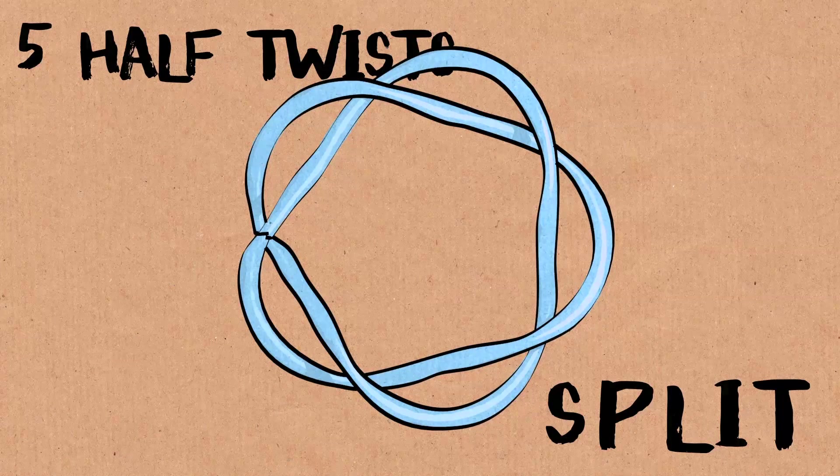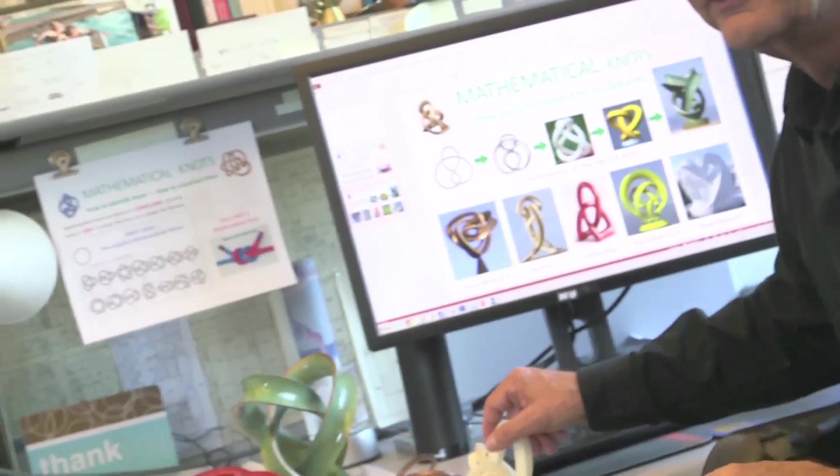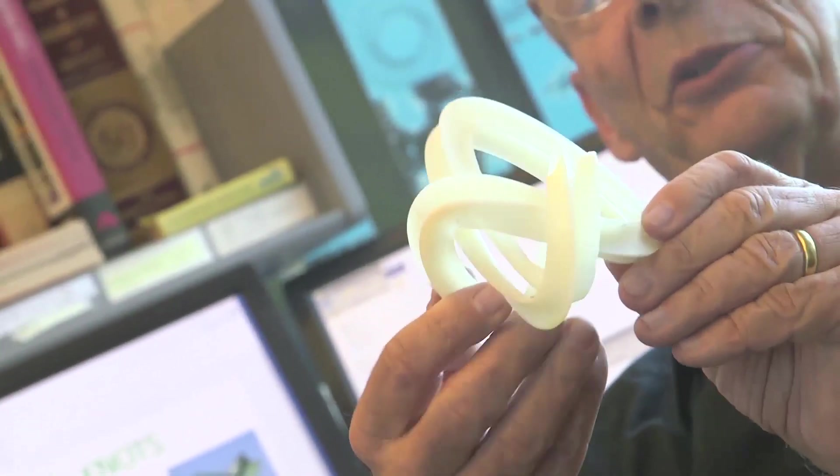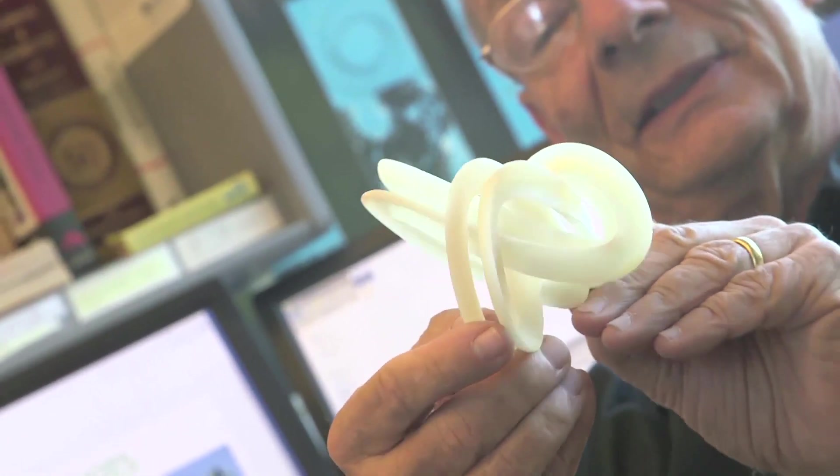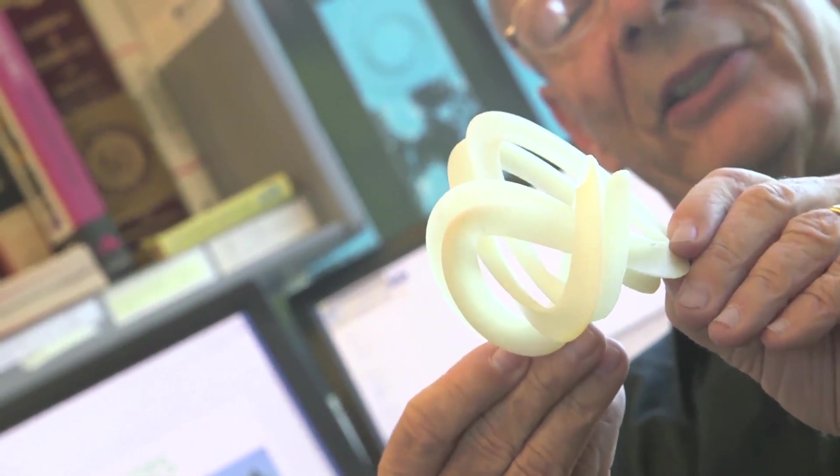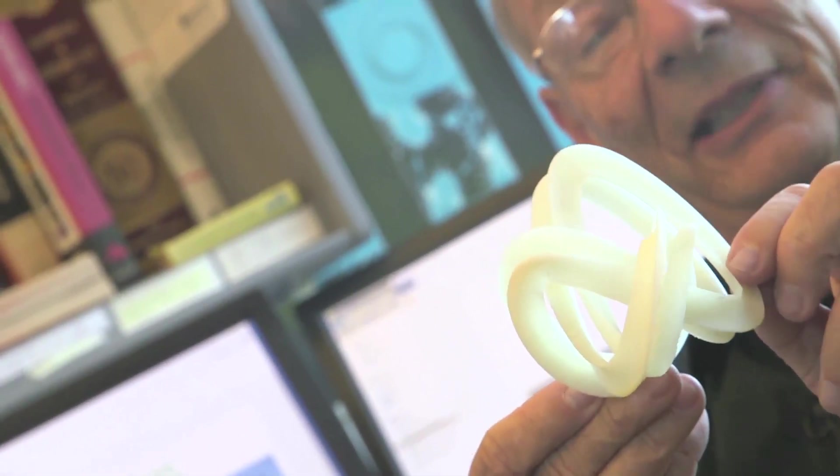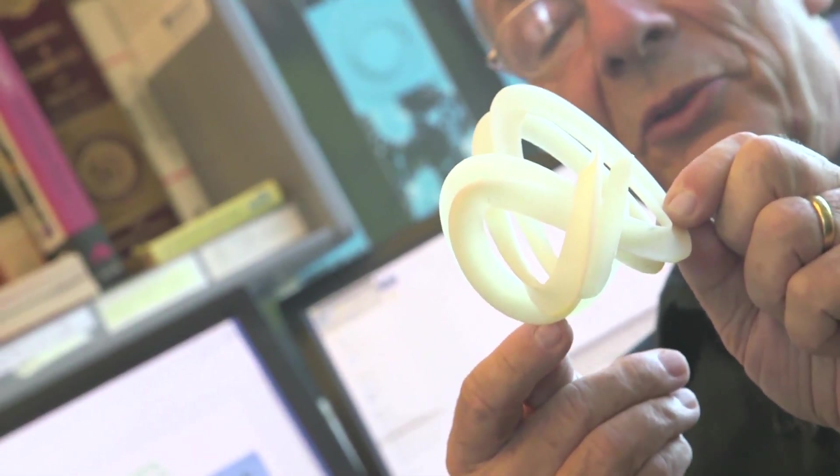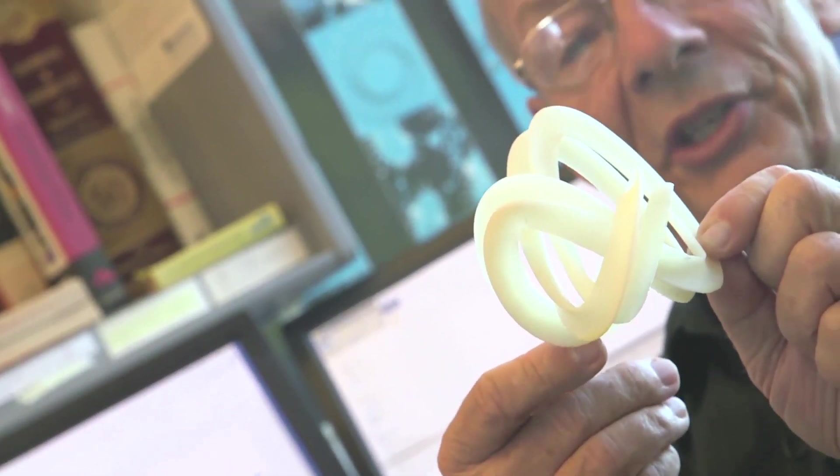We started out with a trefoil knot now. And so here is roughly a trefoil knot. And then we split this trefoil knot down the middle because it happens in this trefoil knot to be of a Mobius structure.